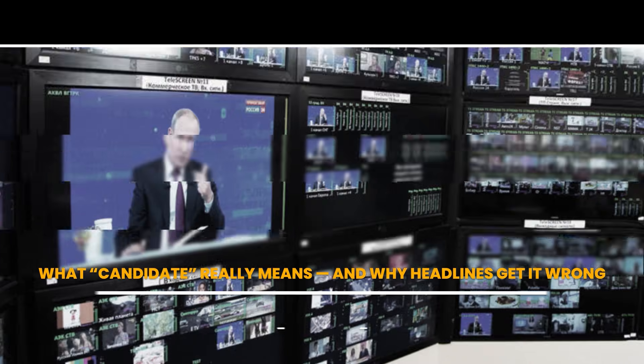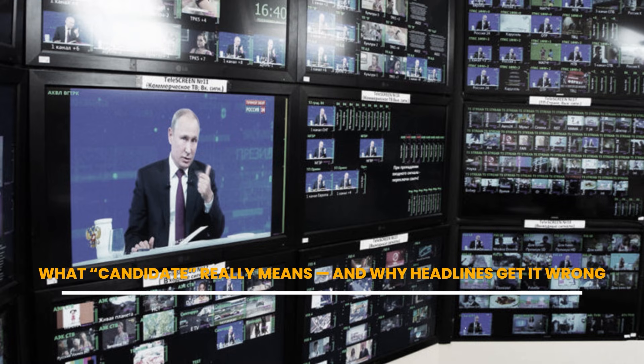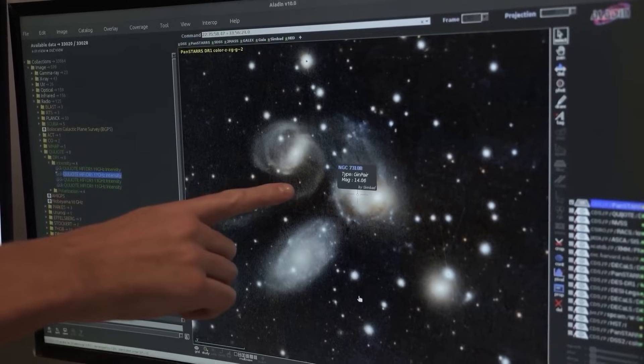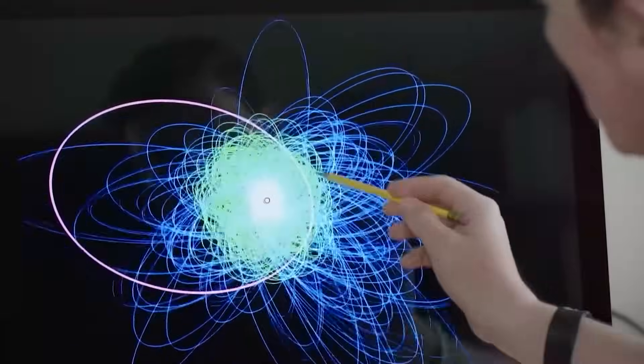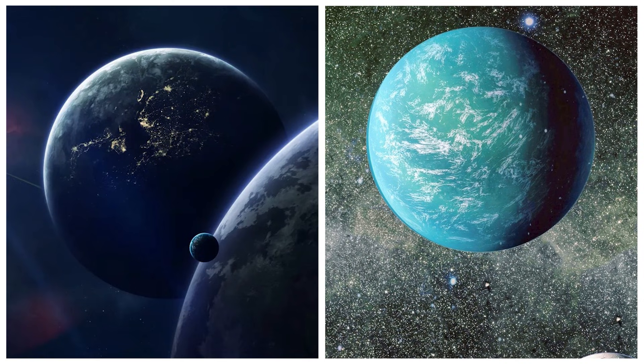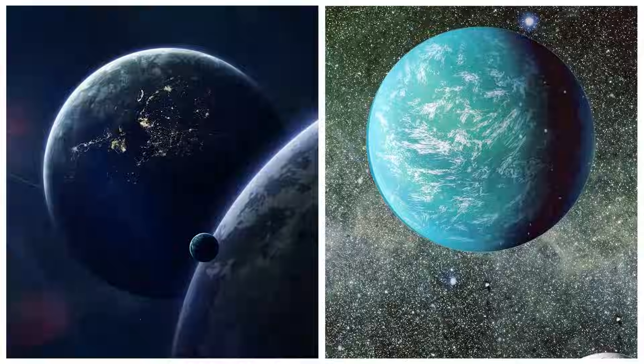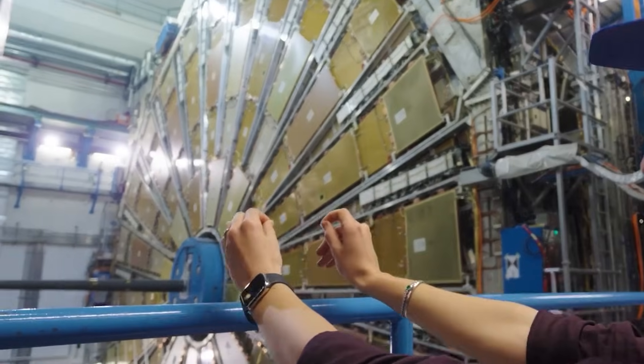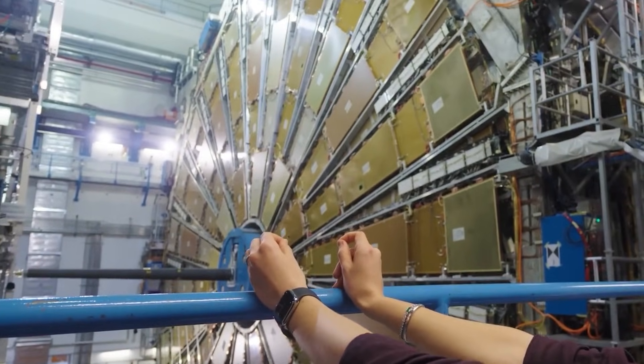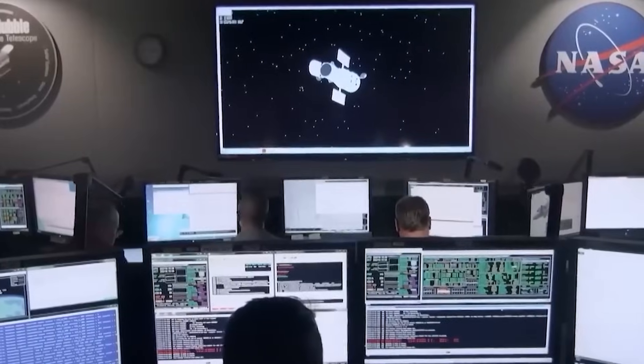In scientific terms, a candidate is a possibility. A filtered signal that survives early cuts. But in the media, candidate becomes confirmed. And that's where everything goes sideways. The Taiwan team never said they found Planet 9. They said they found matches. Objects that move and shine the way we expect Planet 9 to. But that nuance got lost fast. Headlines ran with it. CERN confirms Planet 9. NASA was wrong all along. In truth, neither claim is accurate.